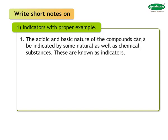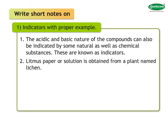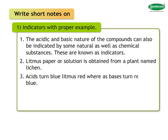Write short notes on: One — indicators with a proper example. Answer: The acidic and basic nature of compounds can also be indicated by some natural as well as chemical substances. These are known as indicators.